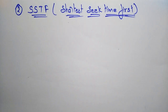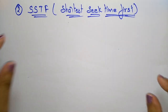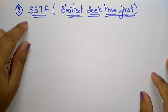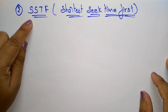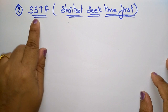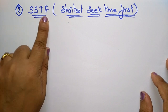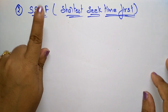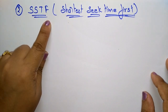Hi students, let us continue with the disk scheduling algorithm. The first disk scheduling algorithm is First Come First Serve, which I already explained in the previous video. Now let's move to the next disk scheduling algorithm, that is the Shortest Seek Time First — SSTF.